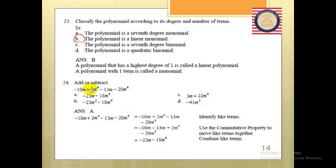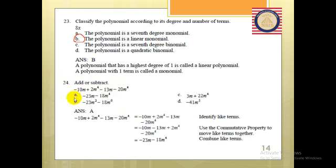We're going to start from where we finished last session. It's number 24. It's telling you to add or subtract. We're going to add or subtract according to the sign of each term. This sign is negative, this positive, this negative, and positive, and so on.